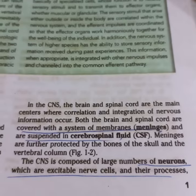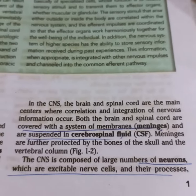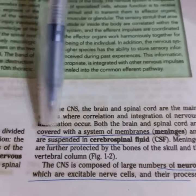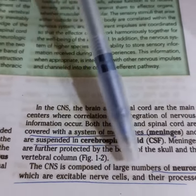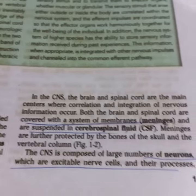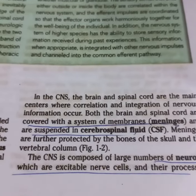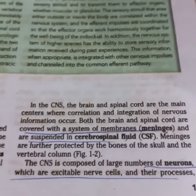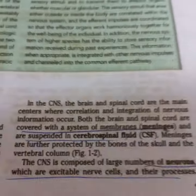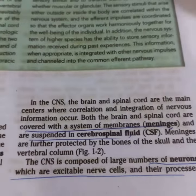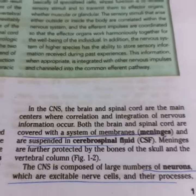The CNS contains a large number of neurons — nerve cells. Their processes include dendrites, in which information comes into the cell body, and axons, through which information can travel out from the cell body.